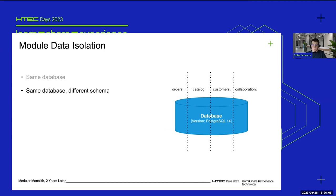Option two is to replicate the modularity at the database level using database schemas. You're still inside the same database, but each module has its own schema — orders, catalog, customers, collaboration. This gives logical separation at the database level, with schemas acting as namespaces for module data. This is starting to look like a modular system, but there's still nothing preventing cross-module queries — it's easy to cheat, so you need to be aware of your architectural constraints and respect them.